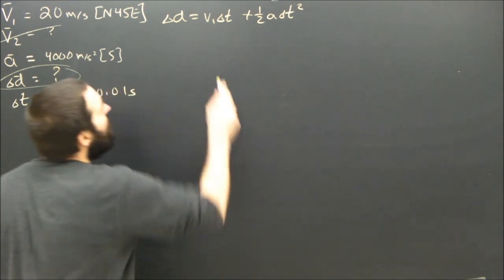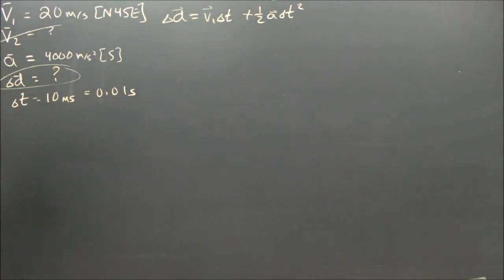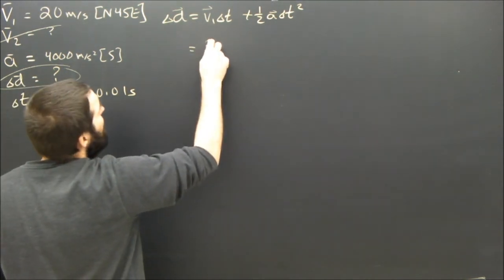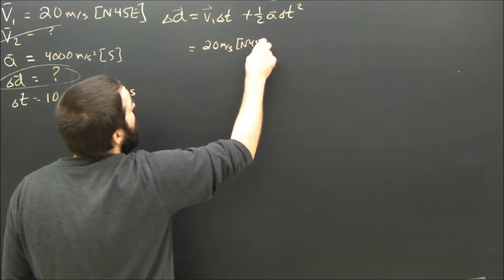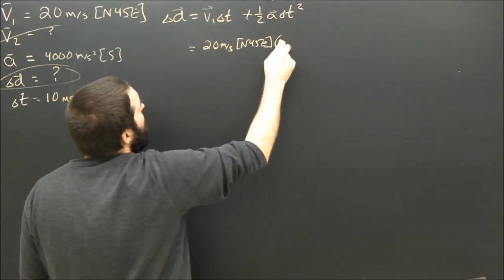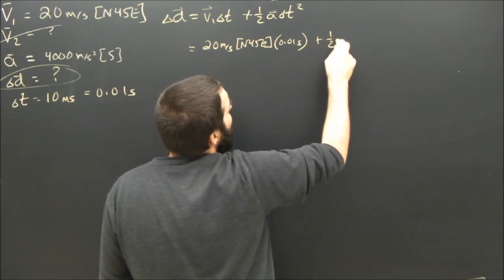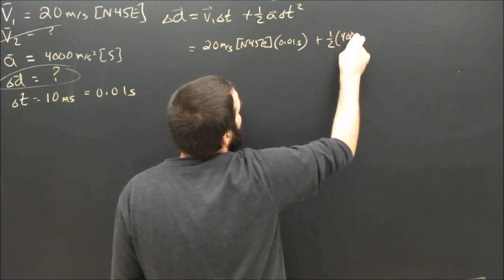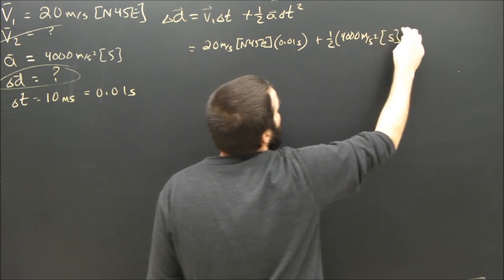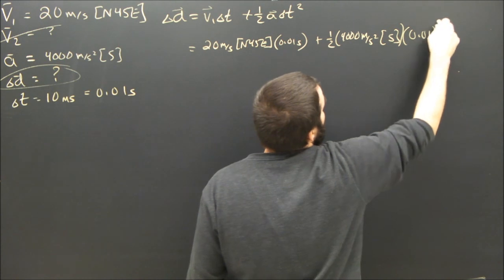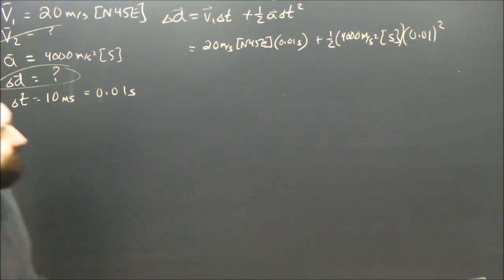Delta d equals V1 t plus a half a t squared. Subbing in, I see that 20 meters per second north 45 east times 0.01 seconds, plus a half of 4,000 meters per second squared south times 0.01 squared seconds.